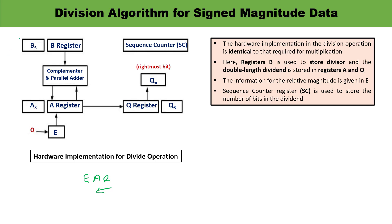Register B is used to store the divisor. Registers A and Q store the double-length dividend on which the operation is to be performed, and the magnitude information is available in E. The sequence counter holds a value equal to the number of bits in the dividend; since the dividend also stores the sign bit, if there are n bits total, 1 is used for the sign, so n minus 1 bits represent the magnitude — that is the value stored in the sequence counter. The result is stored in EAQ; initially E is set to 0. AS and BS represent the signs, and QS represents the sign of the quotient.